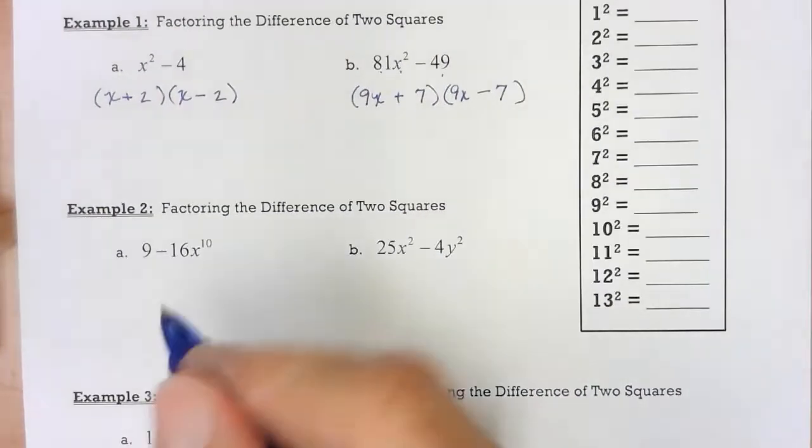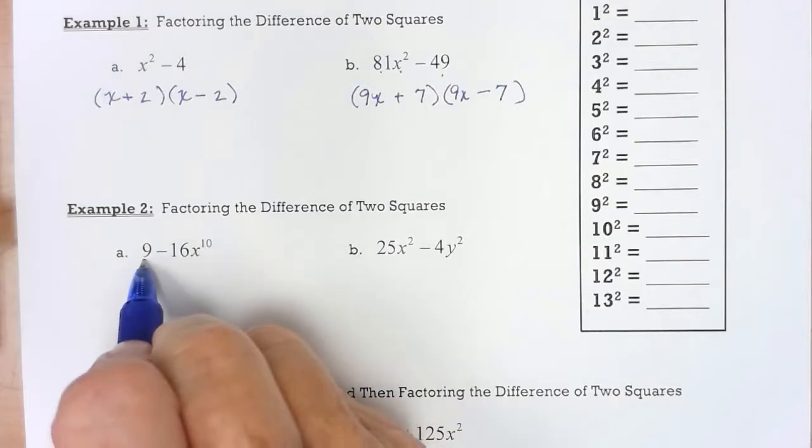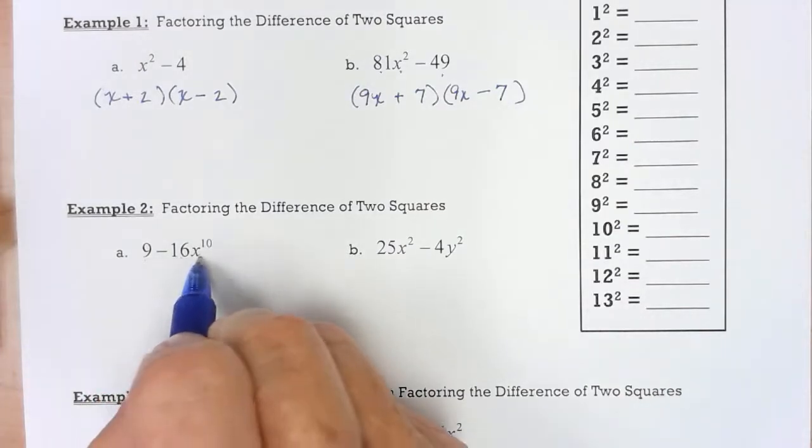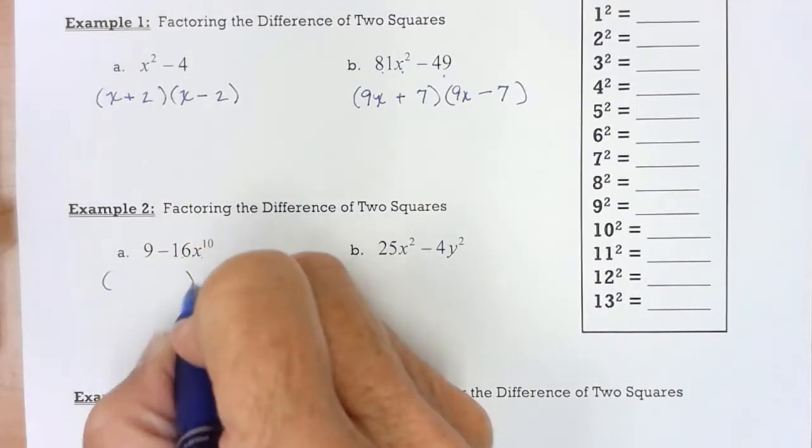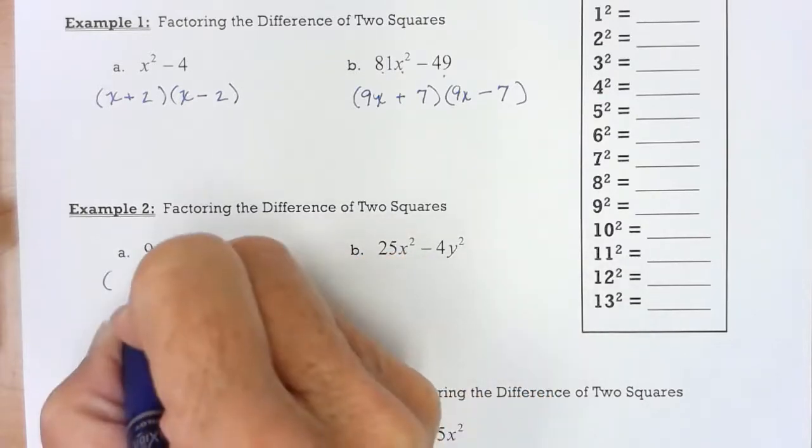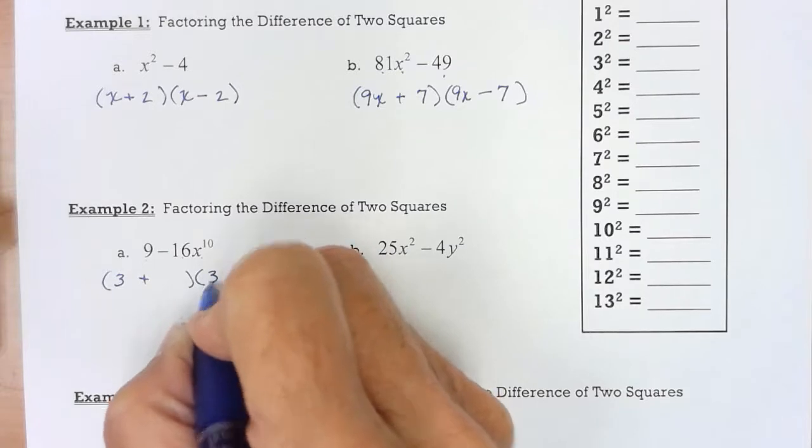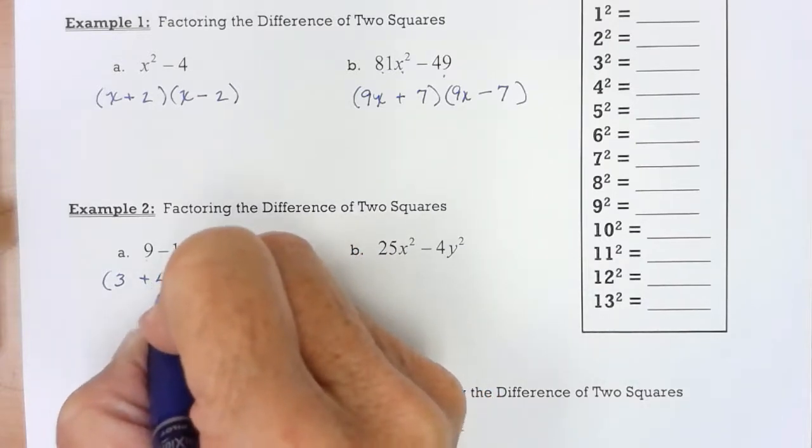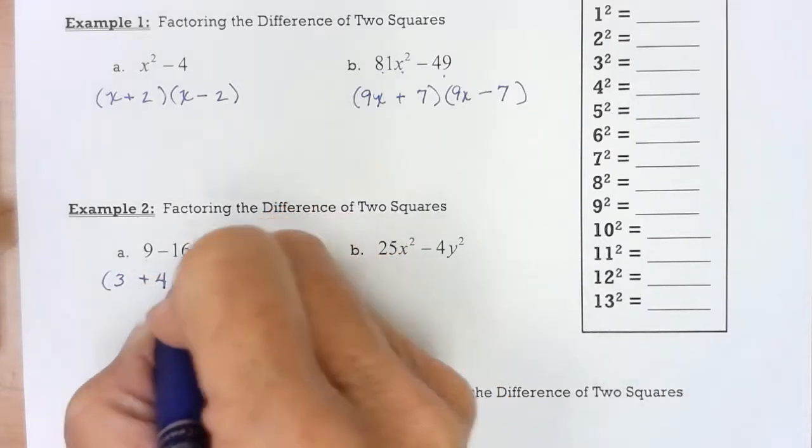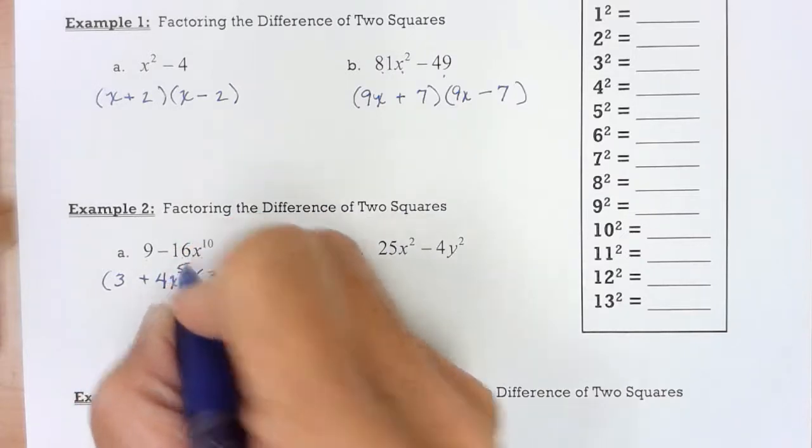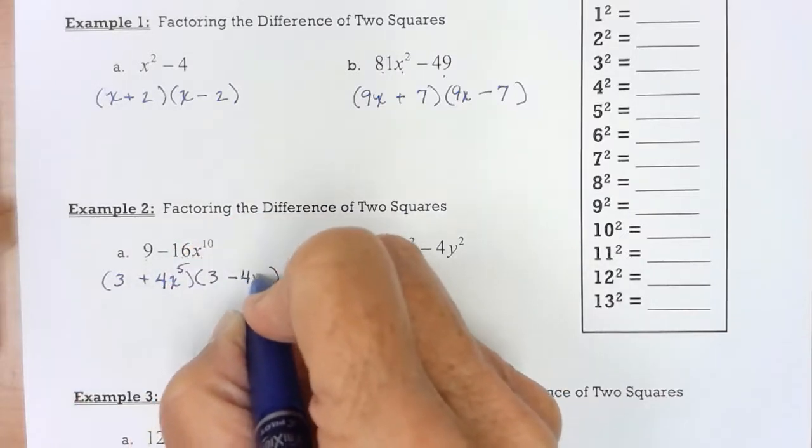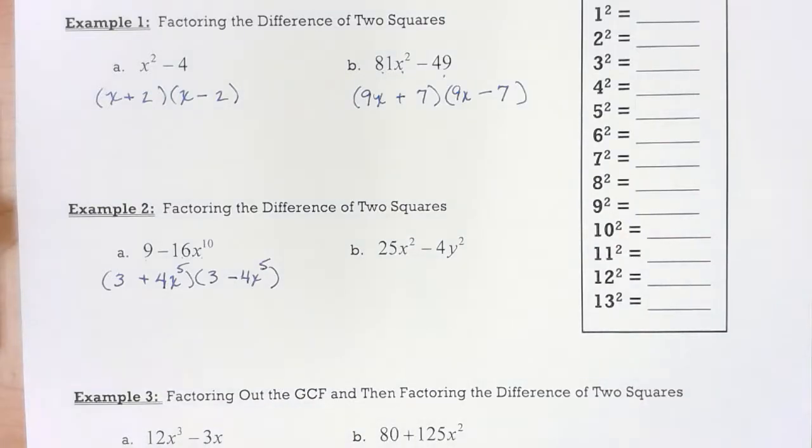I've got some more. I have a difference. That's a perfect square, as is that, as is that. So quickly, two parentheses, a plus and a minus. Square root of 9 is 3. Square root of 16 is 4. Square root of x to the 10th, divide exponent by 2, that would be x to the 5th. That's the answer for that problem.